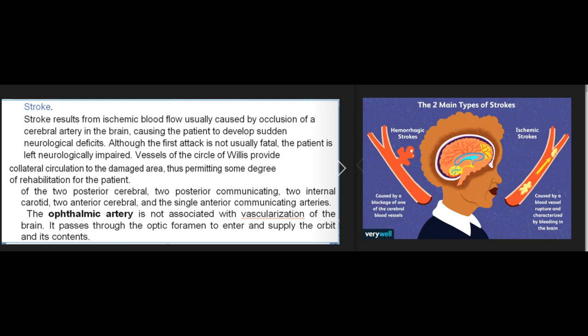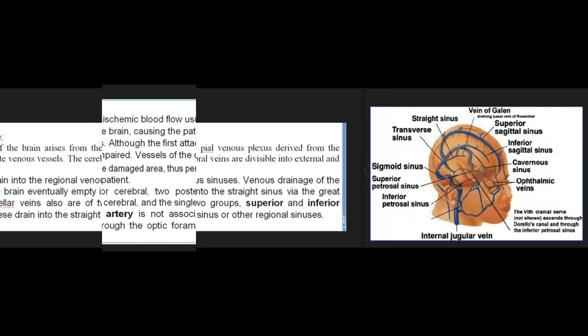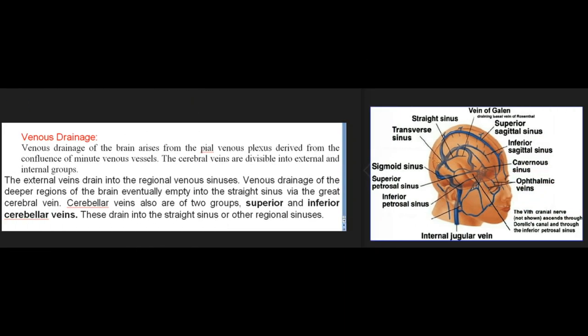The circle of Willis is composed of the two posterior cerebral, two posterior communicating, two internal carotid, two anterior cerebral, and the single anterior communicating arteries. The ophthalmic artery is not associated with vascularization of the brain; it passes through the optic foramen to enter and supply the orbit and its contents. Venous drainage of the brain arises from the pial venous plexus; the cerebral veins are divisible into external and internal groups. The external veins drain into the regional venous sinuses, while venous drainage of the deeper regions of the brain eventually empties into the straight sinus via the great cerebral vein. Cerebellar veins — superior and inferior groups — drain into the straight sinus or other regional sinuses.